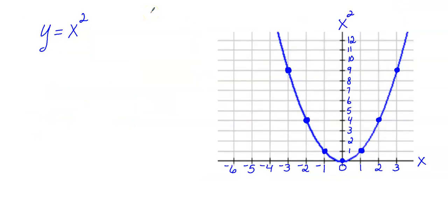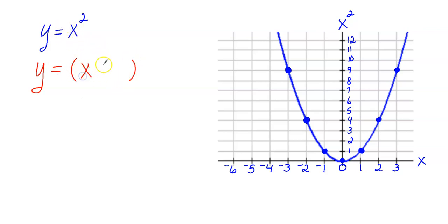Let's look at another situation where I want to move the graph left and right. This is the most confusing — this is where I see the most mistakes because you have to think backwards. Let's say I wanted to take the parent function y equals x squared and translate it to the left 3 units. Since we're moving it left and right, we have to add or subtract something from the x values. You would replace the x with x plus 3, then bring down your squared. When you replace x with x plus 3, it moves the graph left 3 units.